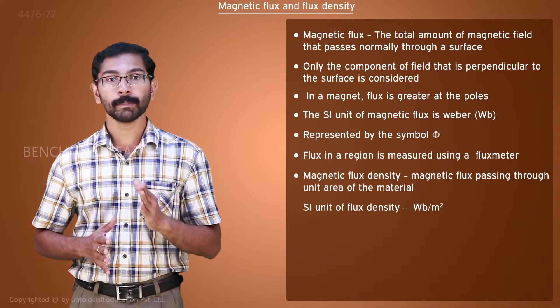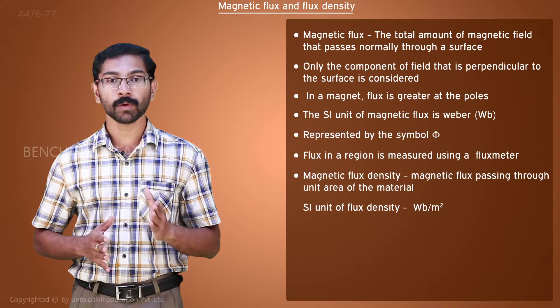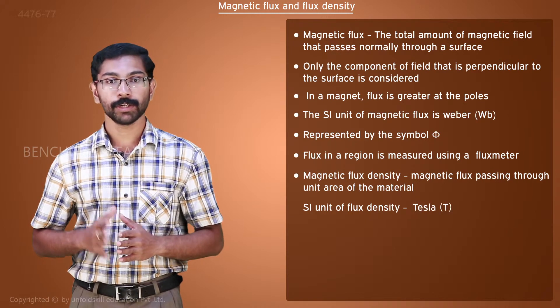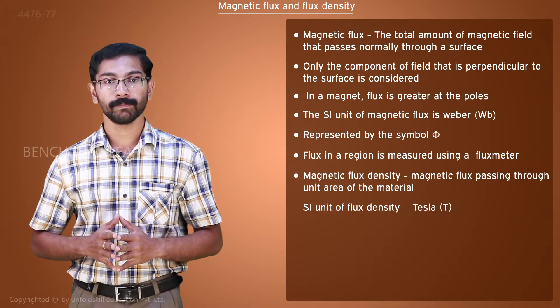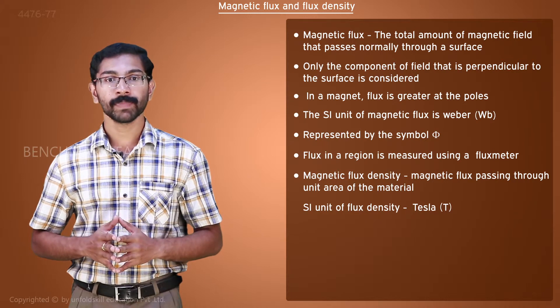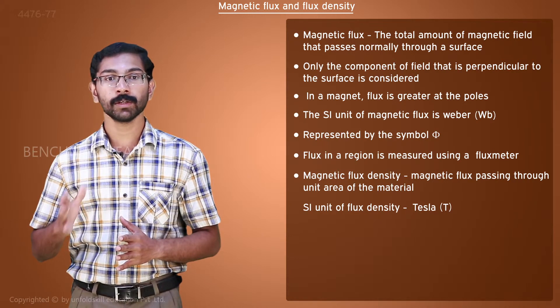The SI unit of magnetic flux density is webers per meter squared, which is also known as tesla, shortened by T. In CGS system, the unit of flux density is gauss, shortened by G.